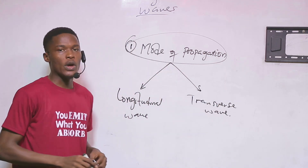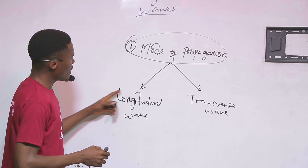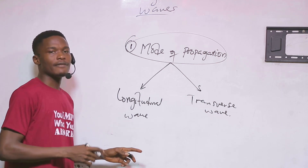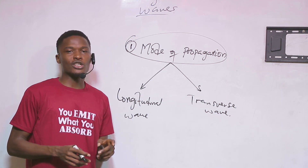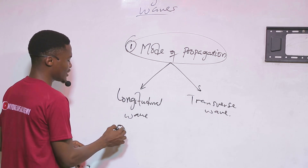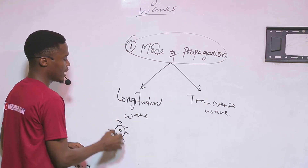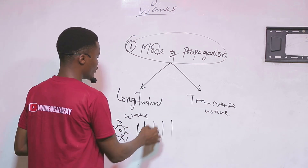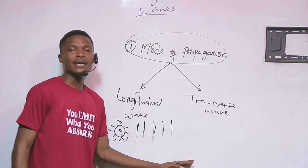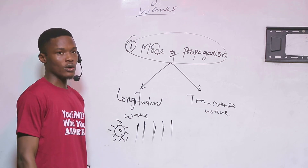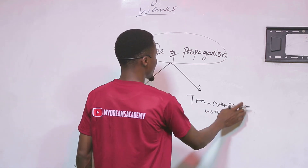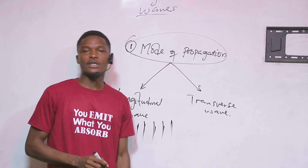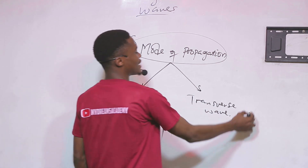These are the two types of waves under the mode of propagation classification. When we talk about longitudinal waves, it is a wave that travels parallel to its source of production — meaning if this is the source of the wave, it travels parallel to that source. On the other hand, a transverse wave is a wave which travels perpendicular to the source — perpendicular meaning at right angles — so if we have a source of a transverse wave, it travels perpendicular, with up-and-down movements.